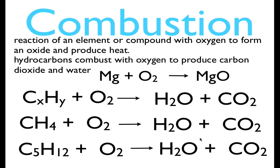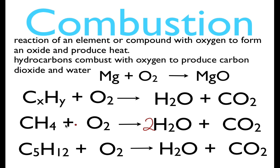We have one carbon on each side, so that's balanced. But we have two hydrogens in water and four hydrogens in methane, so we add a two in front of water to get four hydrogens on each side. That gives us four hydrogens, four hydrogens, one carbon, one carbon. Now for oxygen: two times one is two oxygens from water, plus two more from carbon dioxide, for a total of four. We only have oxygen in one place on the reactant side, so we put a two in front of O2 to get four oxygens. That's the balanced combustion reaction for methane.